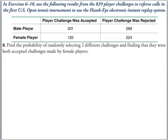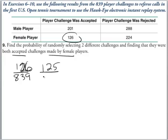Okay, the last example that the book gave us for this type of question. We're going to select two different. Find the probability that they were both accepted and made by female players. Well that's just like the example I did earlier. Here's my two challenges, my two dashes. They both have to be accepted and made by female. Well, there's 126 out of 839 and now there's 125 out of 838. Alright, those are the basics.